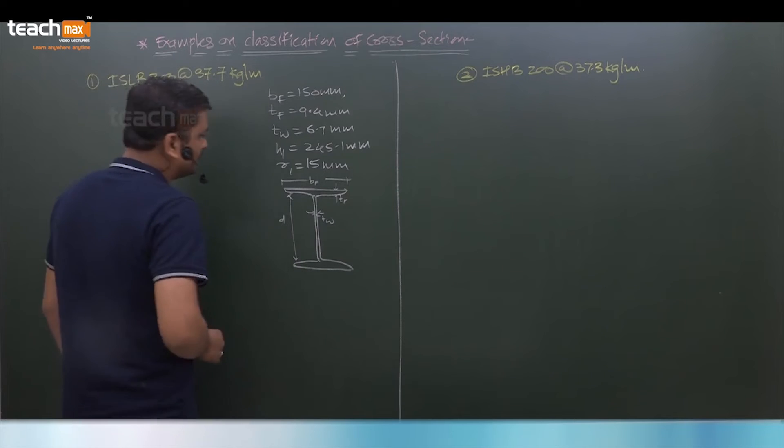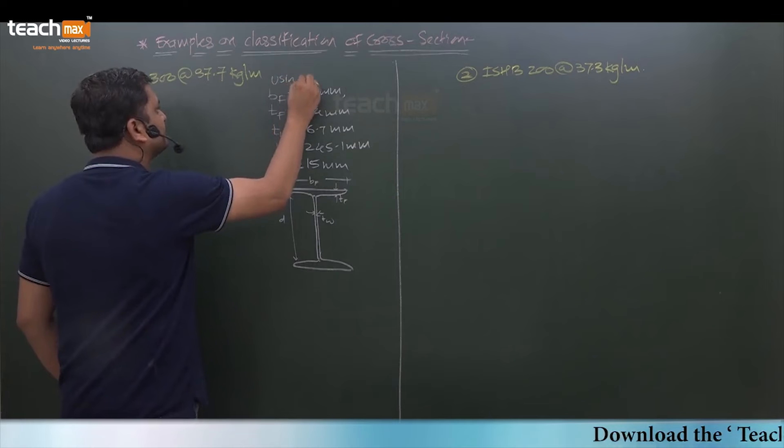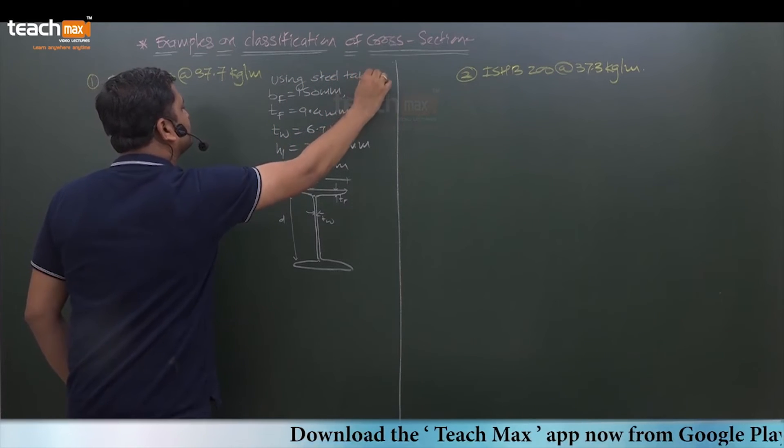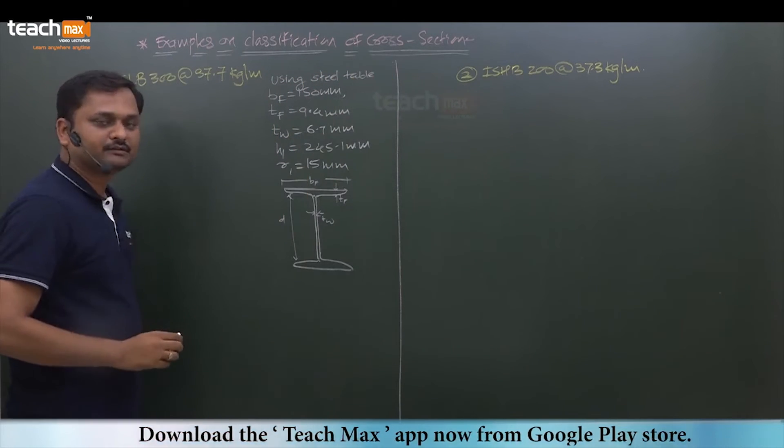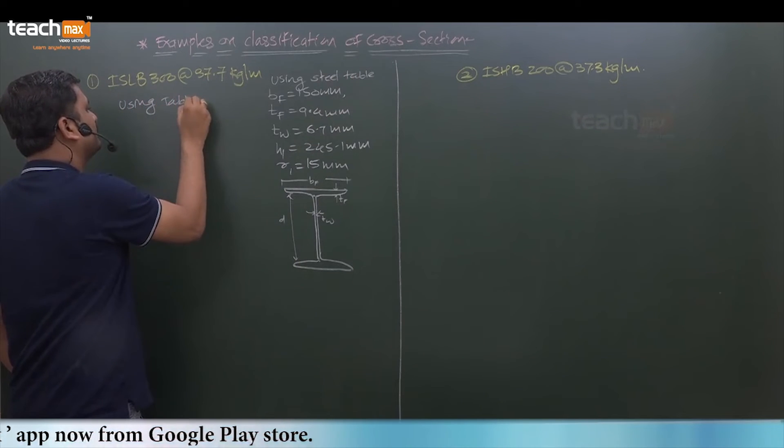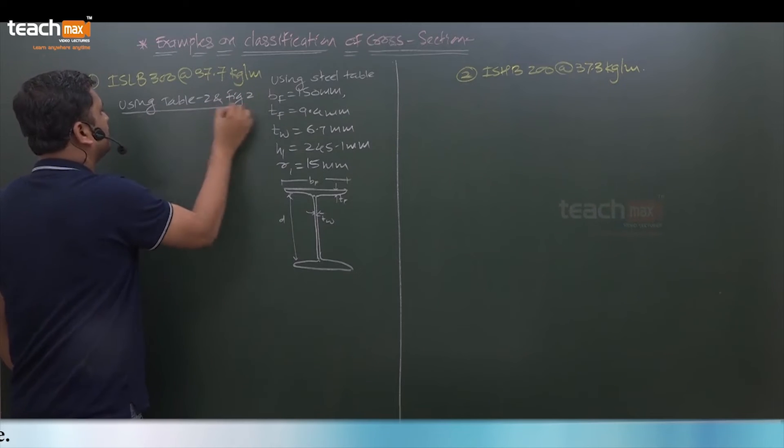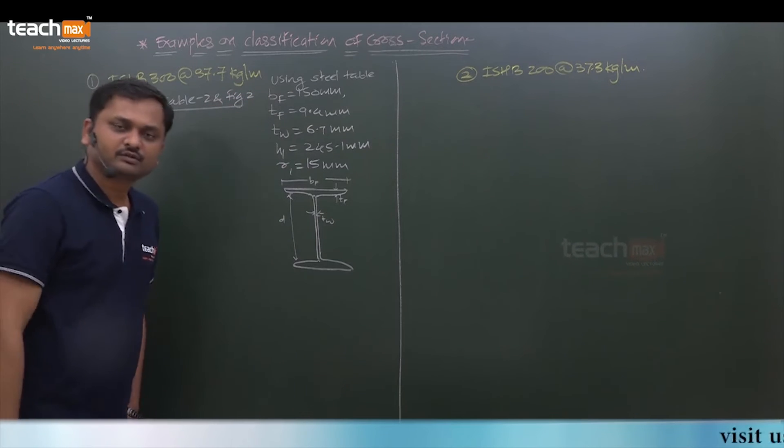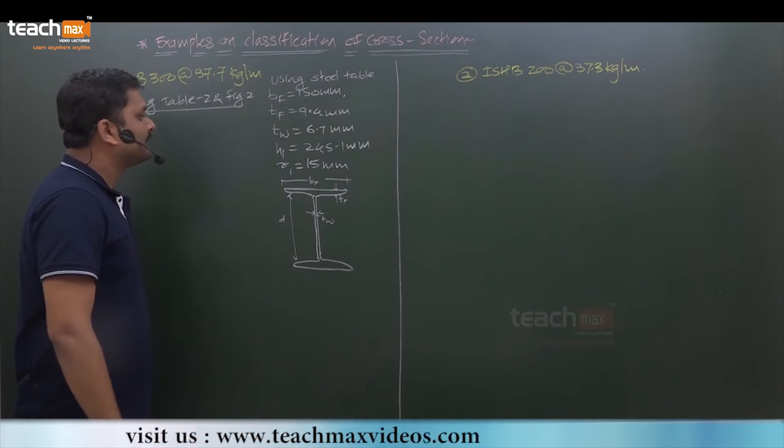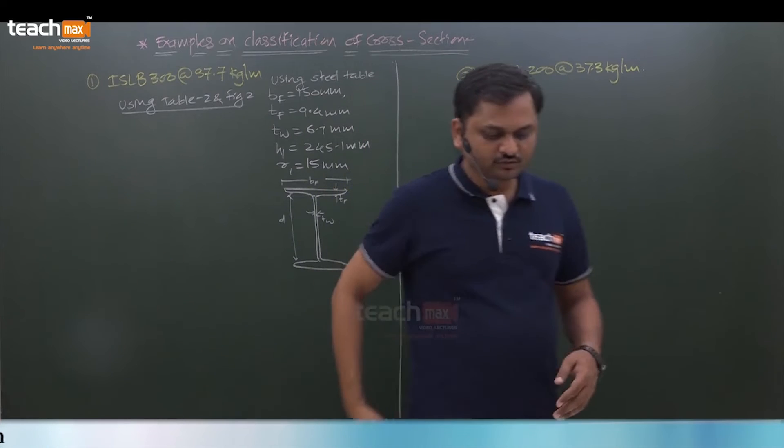And if you go with the table 2 of IS, this is using steel table we get the properties. From Indian Standard 800-2007 we can refer table number 2 and figure number 2. Using table 2 and figure 2 we can easily find out the exact class of the section.